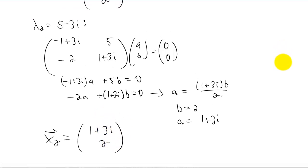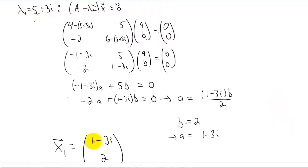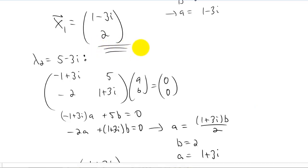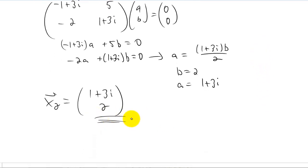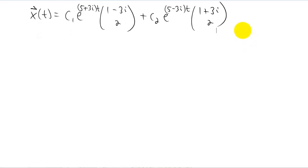Notice what just happened: we found an eigenvector for five plus three i and got [one minus three i, two], and we found an eigenvector for five minus three i and got [one plus three i, two]. So our conjugate eigenvalues gave us conjugate eigenvectors — and that's something that is always going to happen. Once we find one eigenvector we automatically know the second one will be its complex conjugate. Let's go ahead and write down a general solution — there it is, the general solution to that system of differential equations.